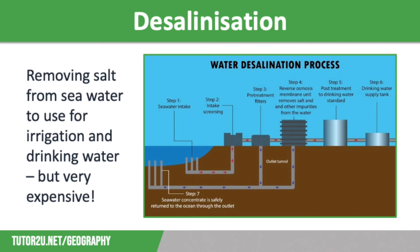The last strategy we are going to discuss is desalination. This is a process of removing salt from seawater to turn it into fresh water for drinking and irrigation. Many countries in the Middle East have desalination plants, and more recently the USA, Japan, and Spain have all embraced this solution to increase their water security.